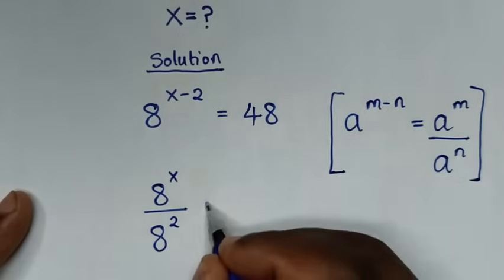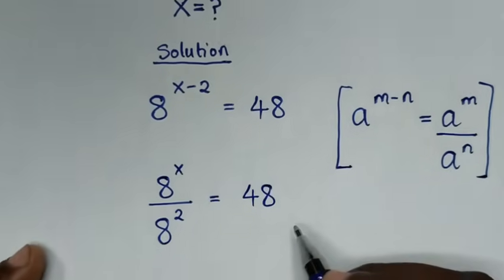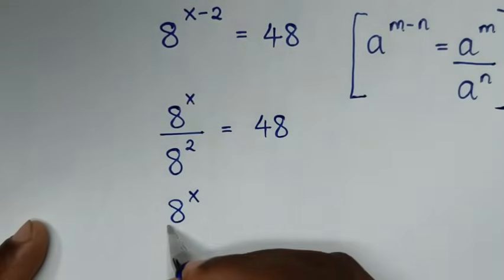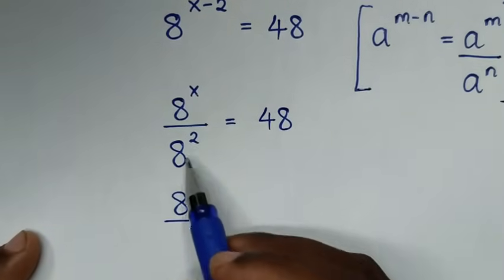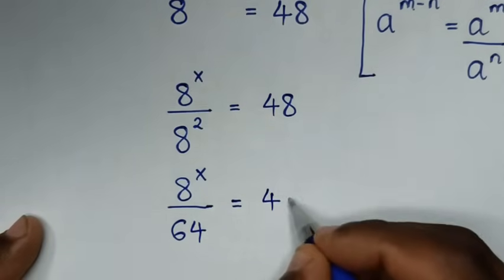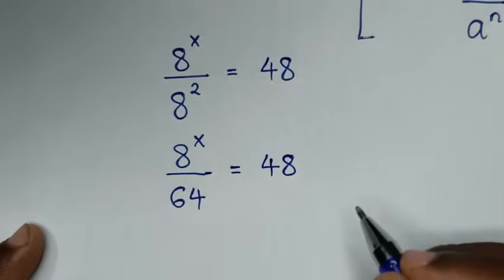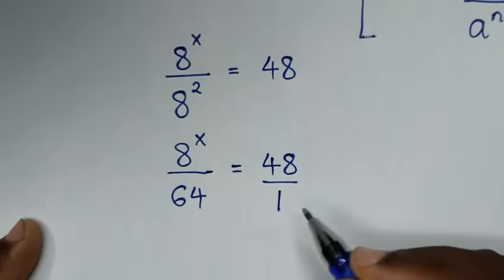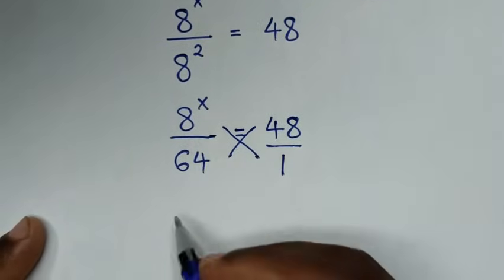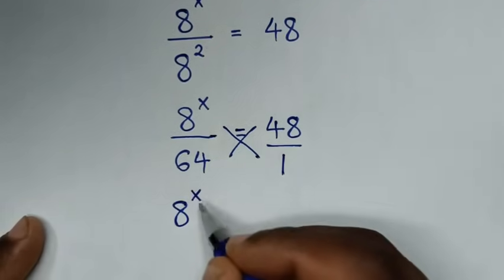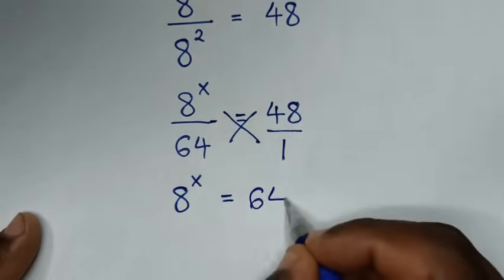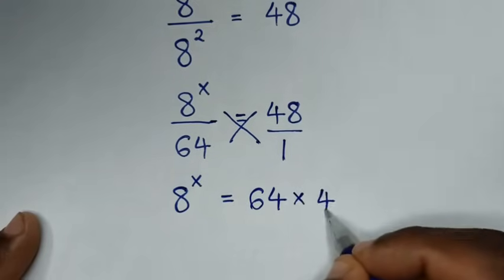So 8 power of x over 8 power of 2 is equal to 48. In the next step, 8 squared is 64, so 8 power of x over 64 is equal to 48. Since 48 is the same as 48 over 1, we cross-multiply: 8 power of x times 1 gives 8 power of x is equal to 64 times 48.